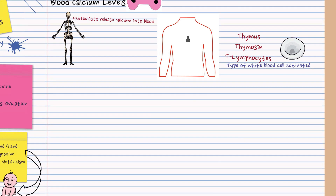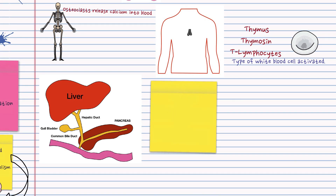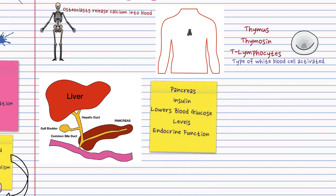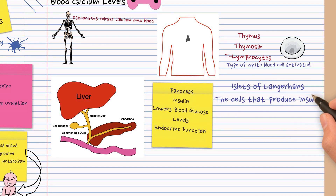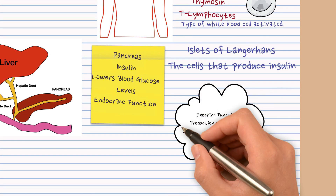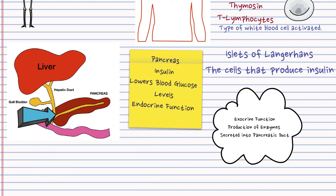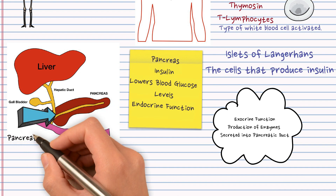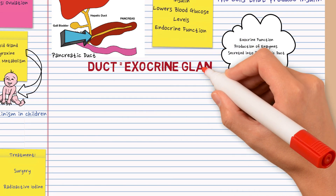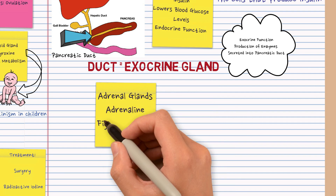Next is the pancreas. It produces the hormone insulin, which is secreted into the blood and is responsible for lowering blood glucose levels. It's the islets of Langerhans that produce insulin. As well as having an endocrine function, the pancreas has an exocrine function — exocrine means it produces enzymes, and these are secreted into a tube known as the pancreatic duct. Connect ducts with exocrine glands.